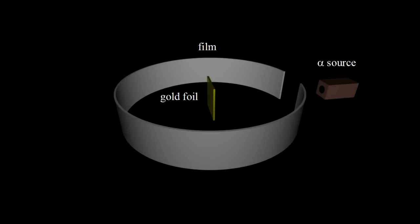Rutherford's team aimed their alpha source at a very thin gold foil. Encircling the gold sample was a detector sensitive to alpha particles, for example, photographic film.